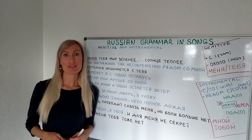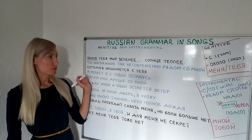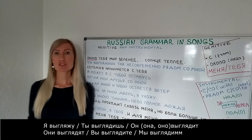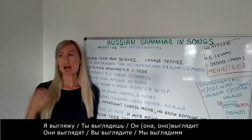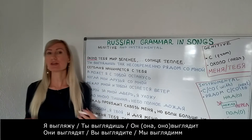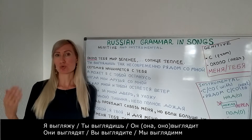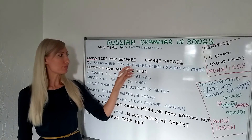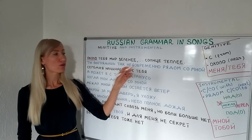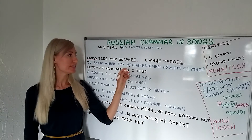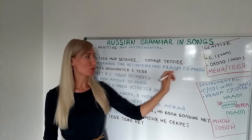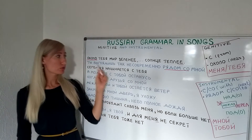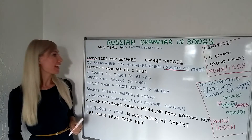The second song is by Viktor Tsoi. The line is: 'Ты выглядишь так несовременно рядом со мной.' 'Ты выглядишь' means 'you look' — the conjugation is: я выгляжу, ты выглядишь, она выглядит, они выглядят, мы выглядим. For example, 'она хорошо выглядит' — she looks good. 'Несовременно' literally means 'unmodern' or old-fashioned — 'современно' is modern, 'несовременно' is old-fashioned. 'Рядом со мной' — 'рядом с' indicates instrumental case, so: you look so old-fashioned next to me.